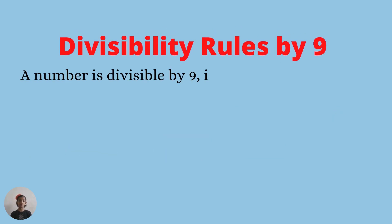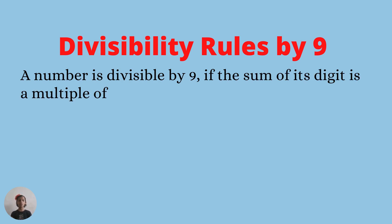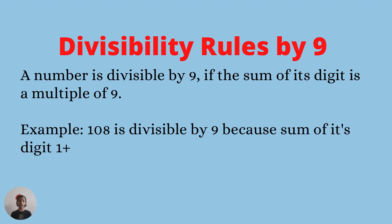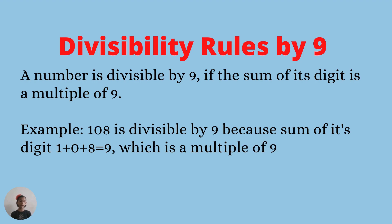Divisibility rule of nine: a number is divisible by nine if the sum of its digits is a multiple of nine. Example: one hundred and eight is divisible by nine because the sum of its digits — one plus zero plus eight — equals nine, which is a multiple of nine.